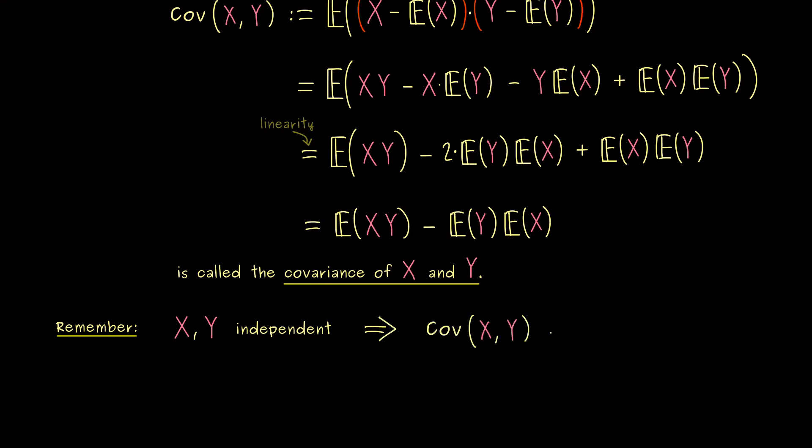Conversely, if the covariance is very far away from zero, then the two random variables are also far away from being independent. However, heads up, the converse implication here is in general false.